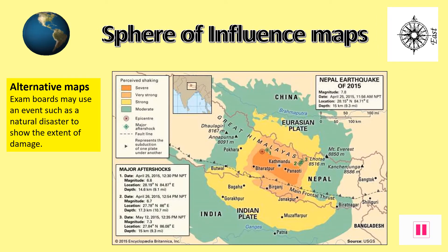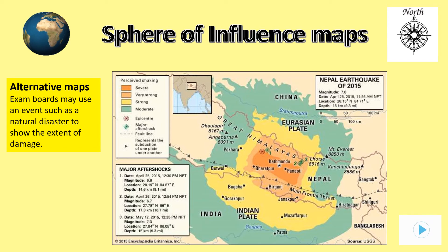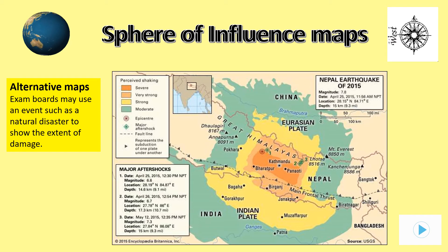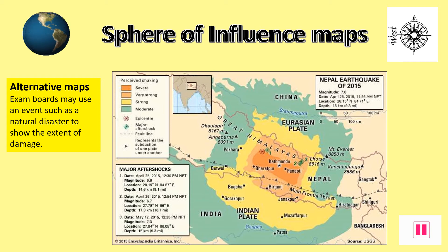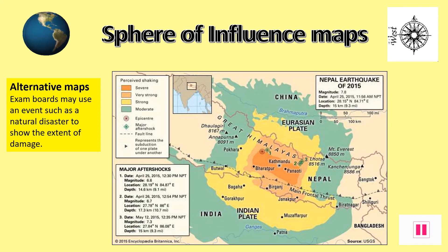Here we can see the damage caused by the Nepal earthquake in April 2015. The epicentre of the earthquake can be seen as a small group of circles northwest of Kathmandu in the centre of the map. The key shows that very severe perceived shaking covered the area to the east of the quake, with much less perceived shaking to the west of the epicentre. Pause the show and look at how the key helps show the sphere of influence from the Nepal earthquake of 2015.